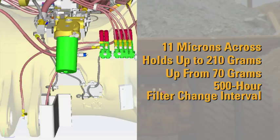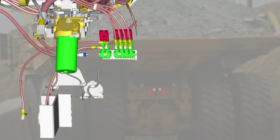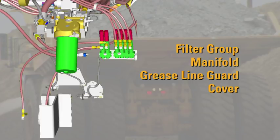This means less time changing filters and more time hauling loads. The field-installed kit includes a filter group, manifold, grease line guard, and cover. The estimated installation time for this kit is three hours.